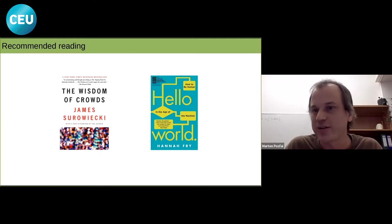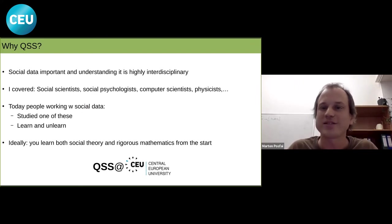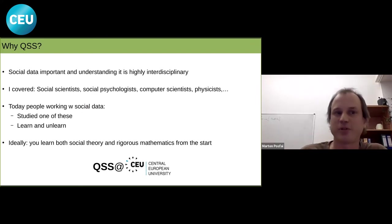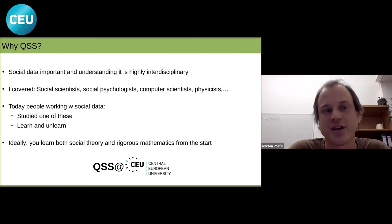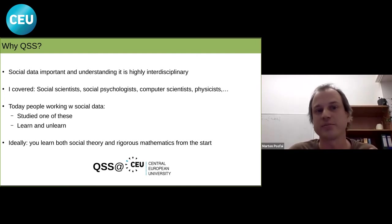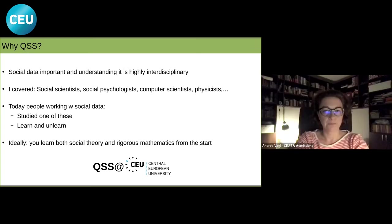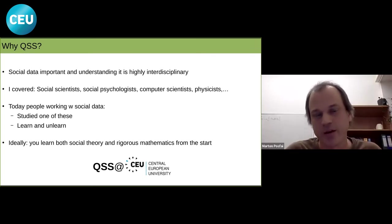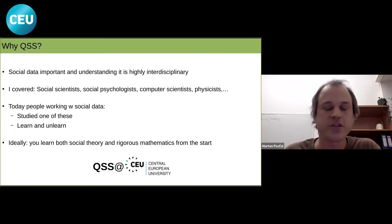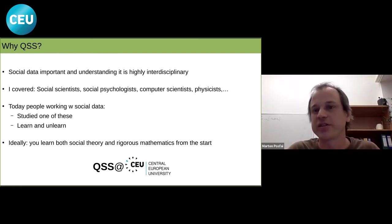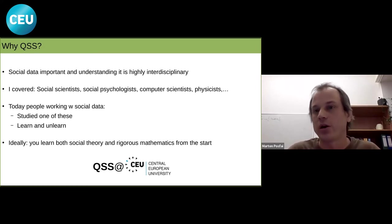Why should you be interested in Quantitative Social Sciences? Social data is important because it affects our lives and is a rich and interesting dataset. Understanding it is a highly interdisciplinary endeavor — the examples covered involved social scientists, social psychologists, computer scientists, physicists, and more. People from very diverse backgrounds are working on these problems.